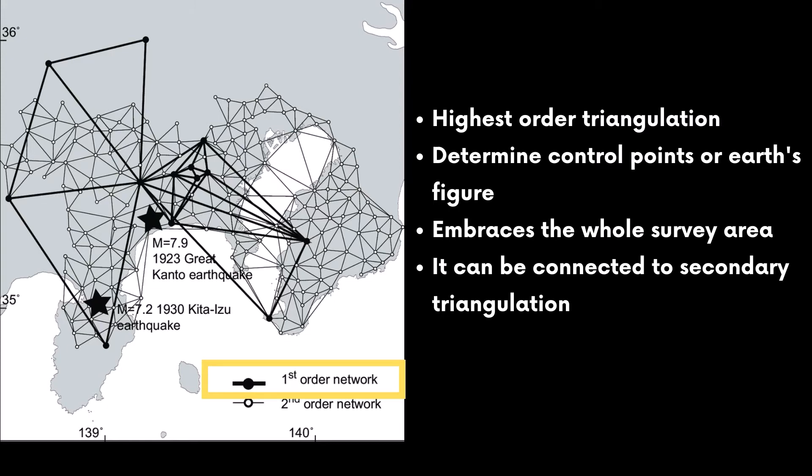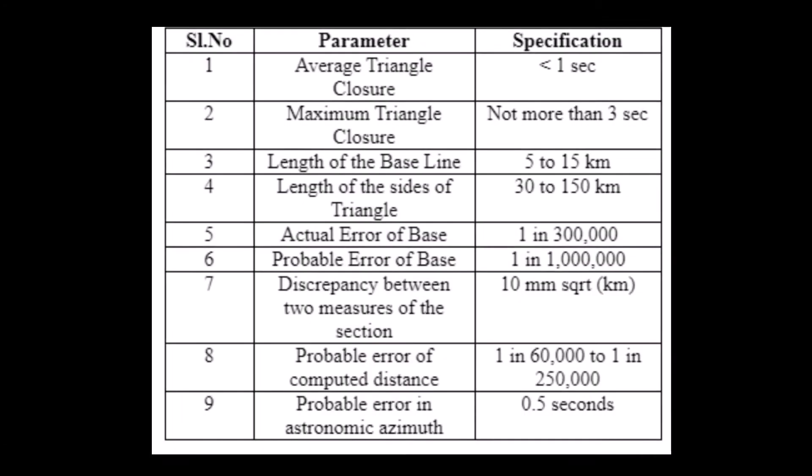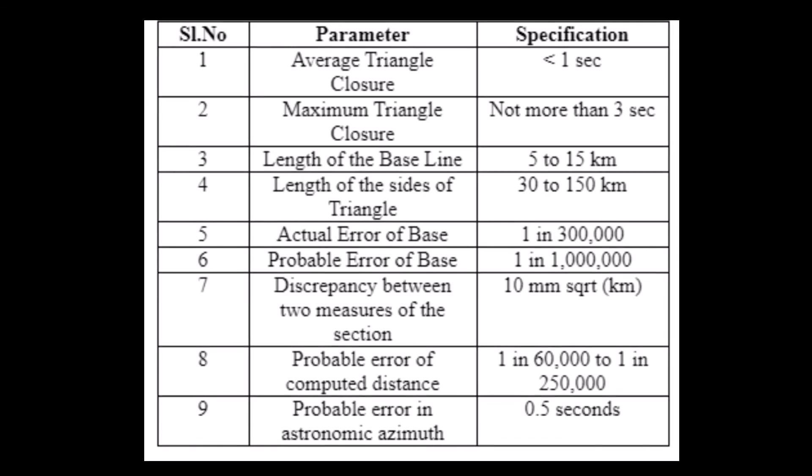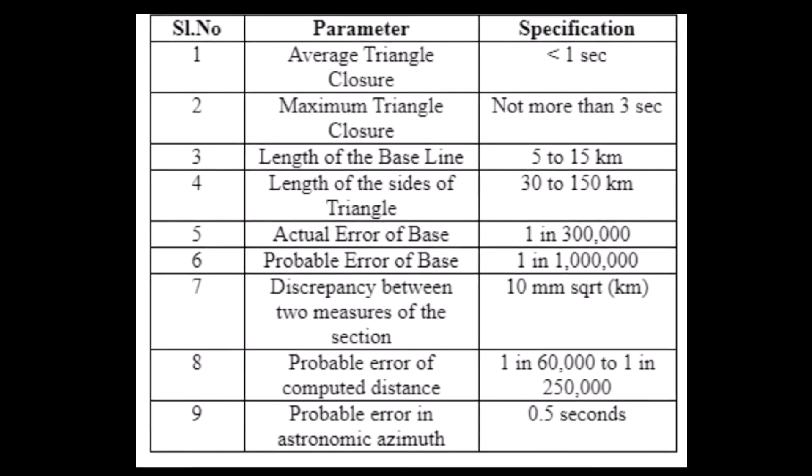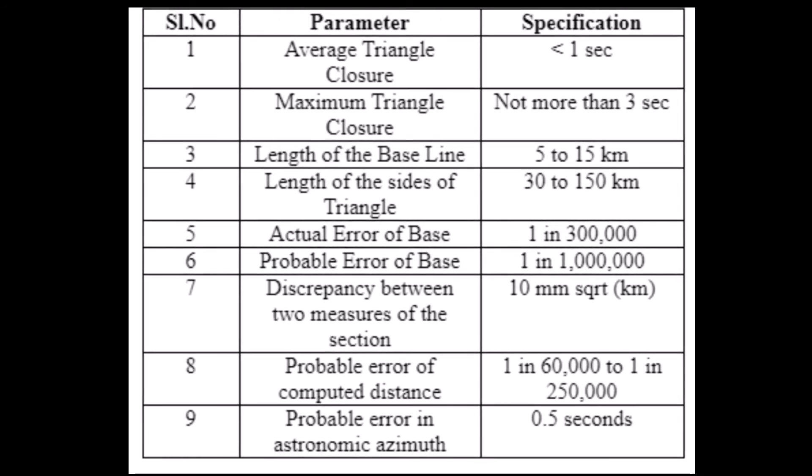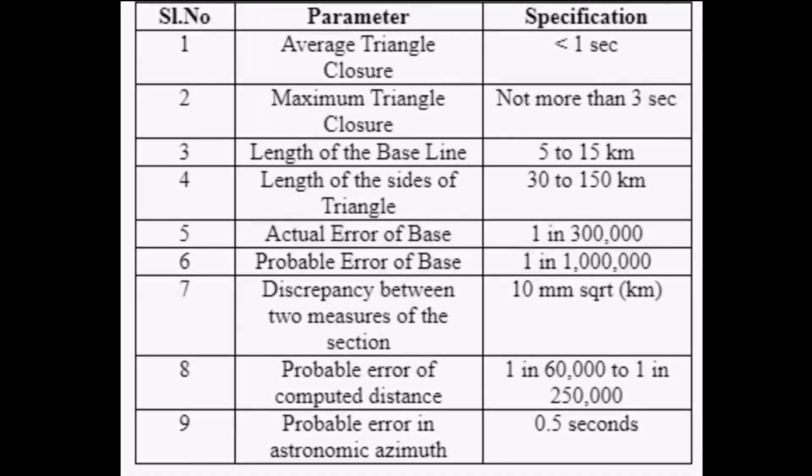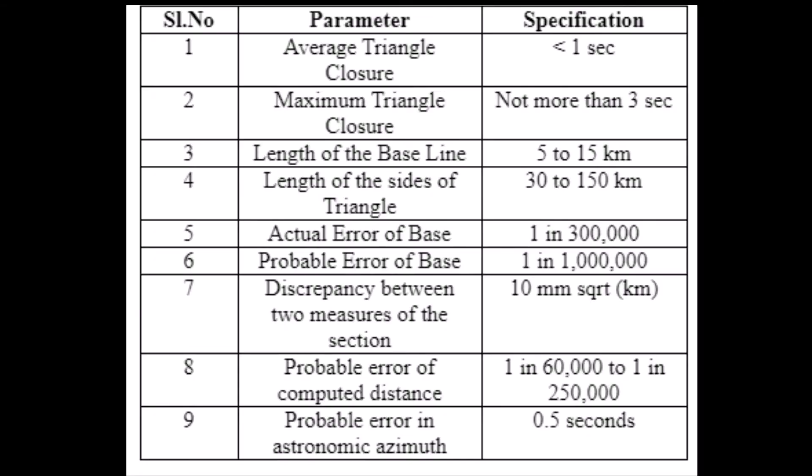The specifications are shown in the figure where the average triangle closure, if it is a parameter considered, the specification must be less than one second. Similarly, all the specifications necessary for a primary triangulation are shown in the figure.